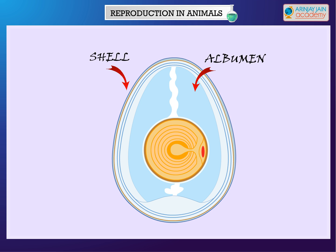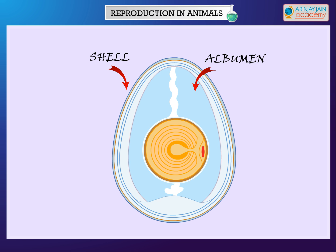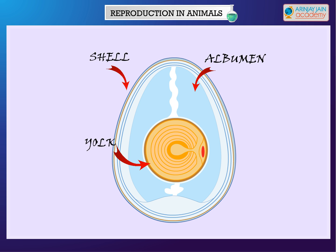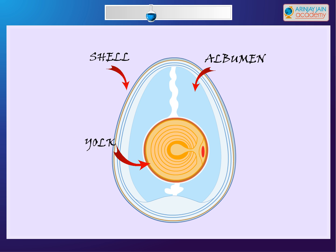Albumin — it is a white jelly-like substance present within the egg shell. It is rich in proteins. Yolk — the yellow inner part of the egg is called yolk.